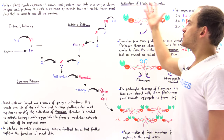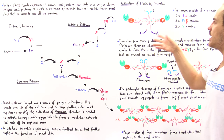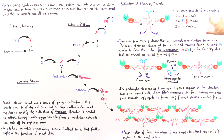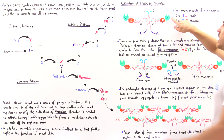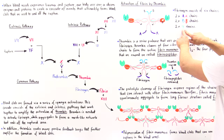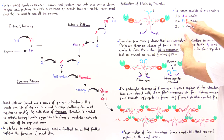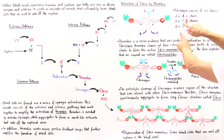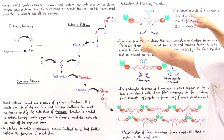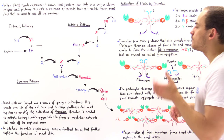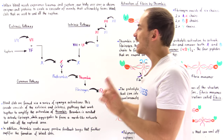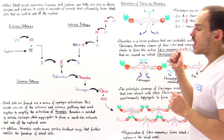A single fibrinogen molecule consists of six chains: two purple uppercase A chains, two red lowercase alpha chains, two blue B chains, two orange beta chains, and two green gamma chains. So we have A, alpha, B, beta, and gamma subunits — two of each — found in a single fibrinogen molecule. This molecule is in its inactive zymogen form.